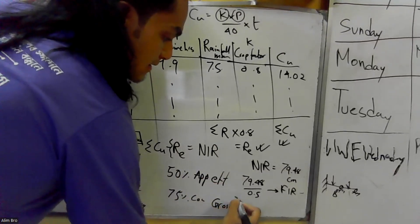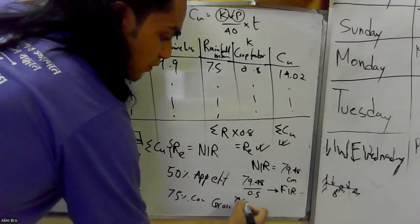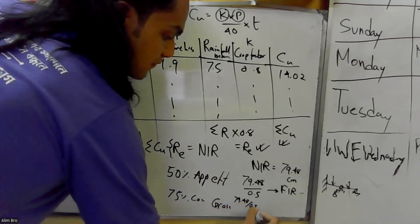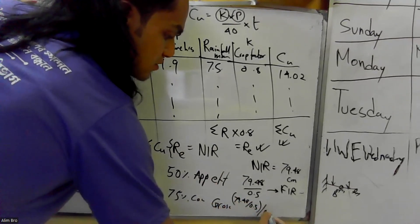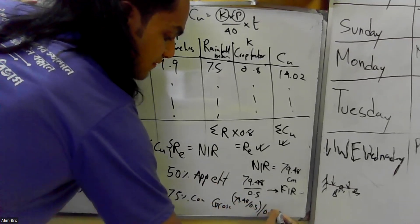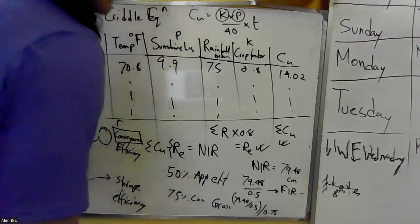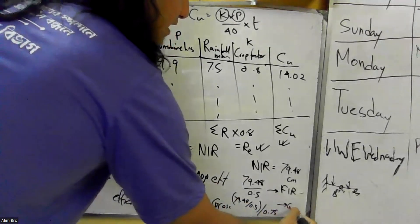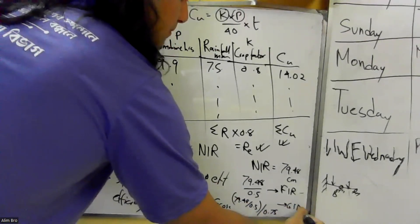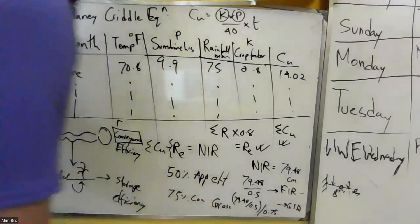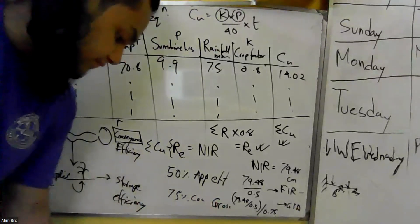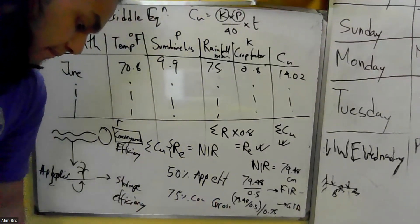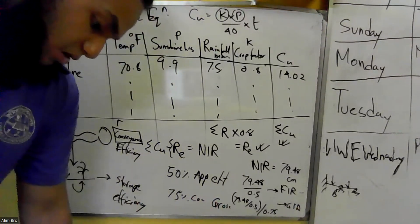79.48 divided by 0.5 (full application efficiency value) divided by 0.75 gives the gross irrigation requirement.